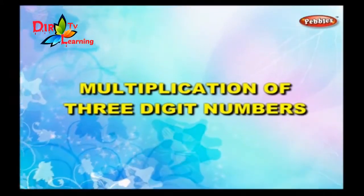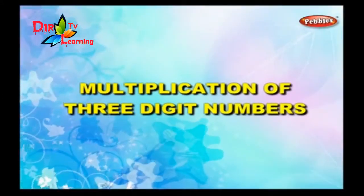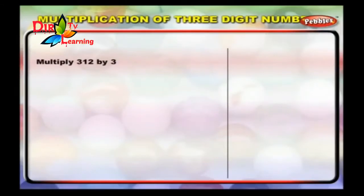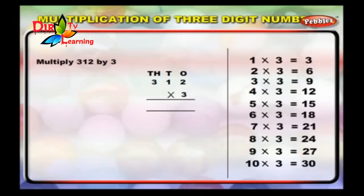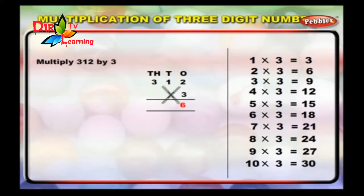Multiplication of three-digit numbers. Multiply 312 by 3. Step 1: Multiply 2 ones by 3. 2 ones into 3 is equal to 6 ones. Write 6 under the ones column. Step 2: Multiply 1 ten by 3. 1 ten into 3 is equal to 3 tens. Write 3 under the tens column.